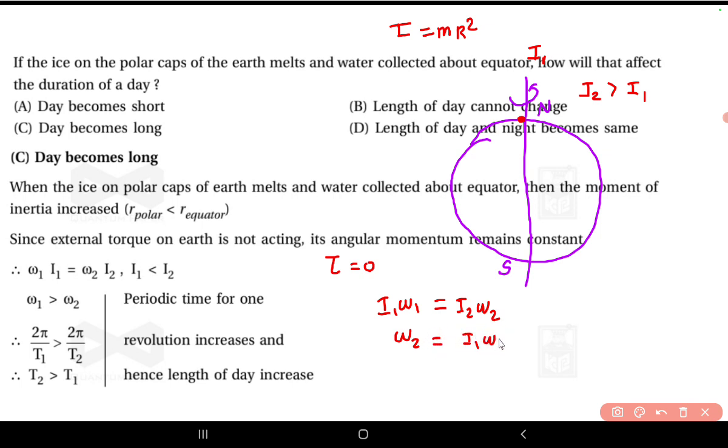Here, I₂ is greater than I₁, so naturally ω₂ will be less than ω₁ because the denominator is large. The denominator increases, so the revolution frequency, or the rotation speed of the Earth, is smaller than it was earlier.